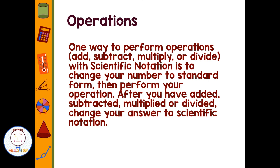One way to perform operations — adding, subtracting, multiplying, and dividing — with scientific notation is to change your numbers into standard form, then perform the operation, and then change your answer back into scientific notation. There are other methods, but I think this is the easiest way for most of us.